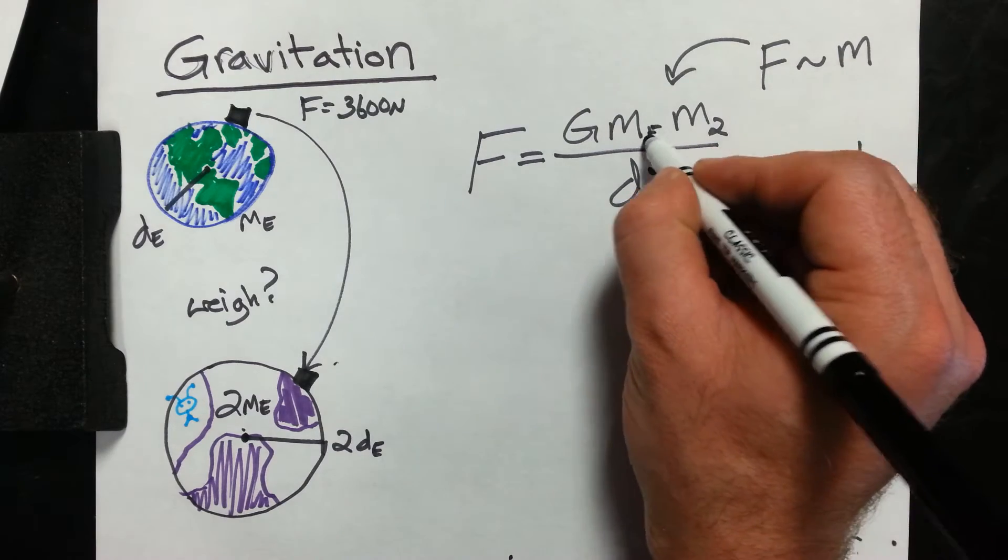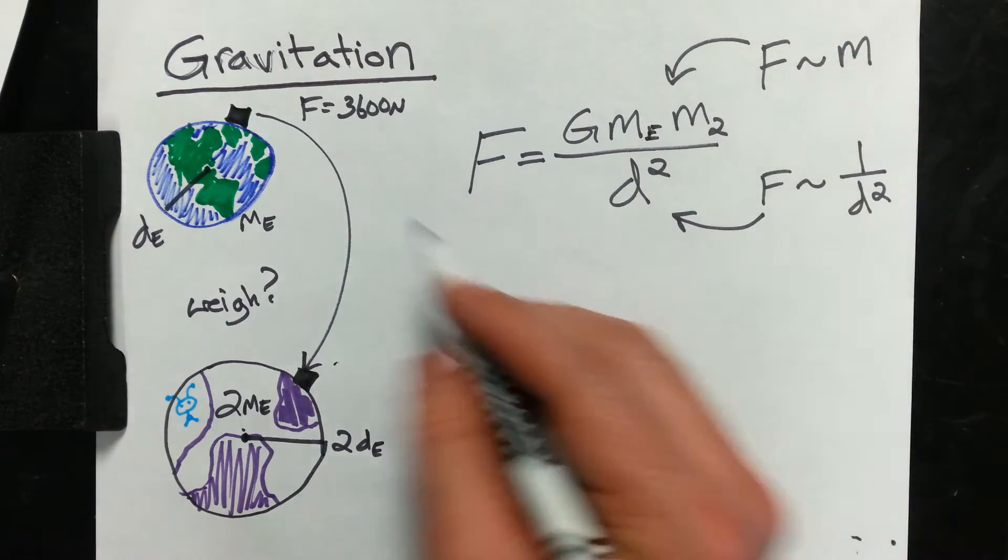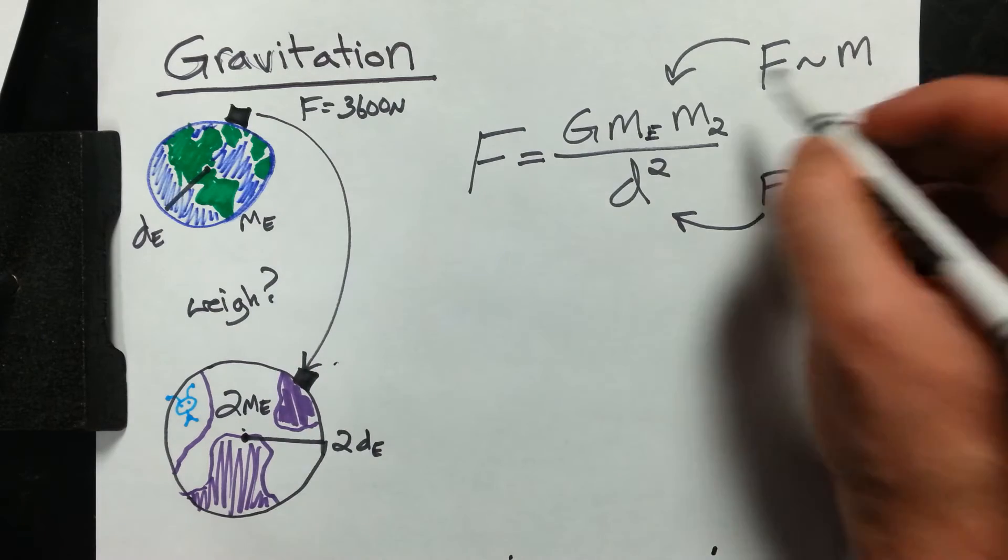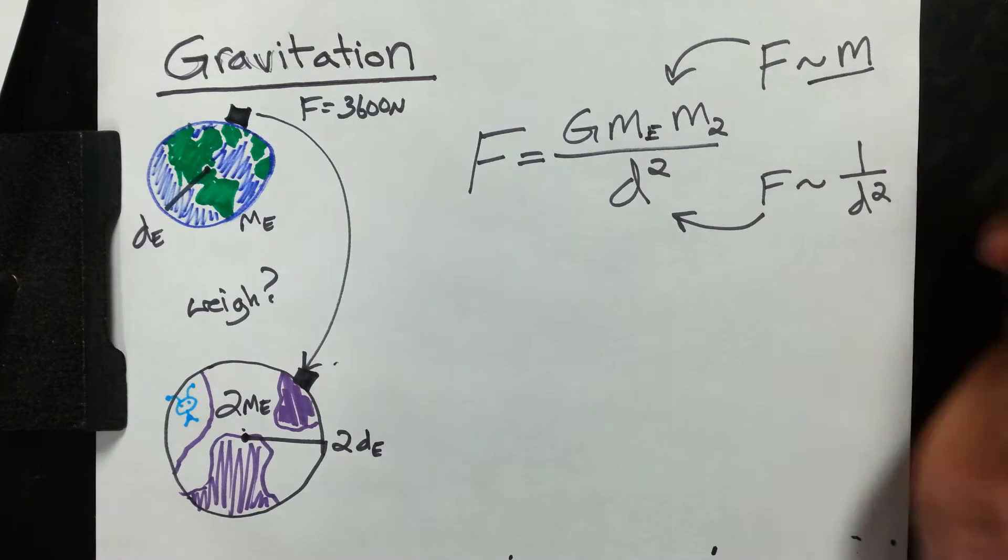That's the mass of the planet. In our case, that's Earth. And mass two, that would be the mass of the satellite, the probe. Alright, so this tells us that force is proportional to the mass, alright?